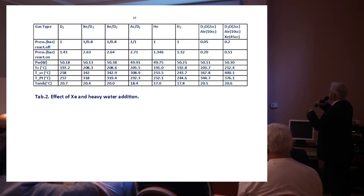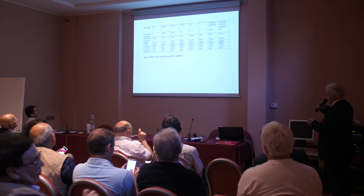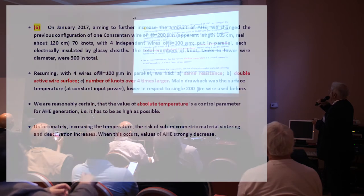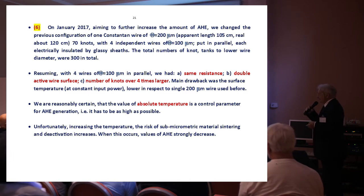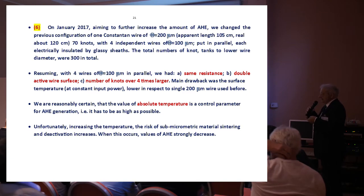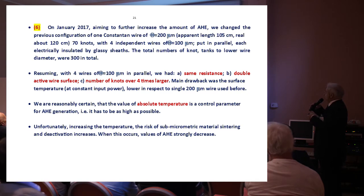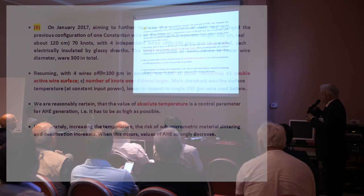A data table shows the effect of xenon addition — the best results are always with xenon. To increase the anomalous heat for the company partner, the simplest approach is to increase the number of wires with the same total input power, meaning smaller wire diameter. With half the diameter, we get four times the number of nodes, arriving at up to 300 nodes — a very large number — and twice the surface area.